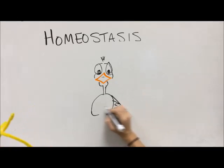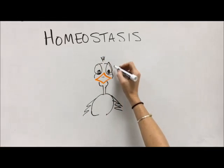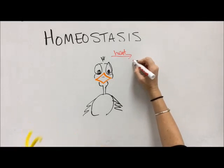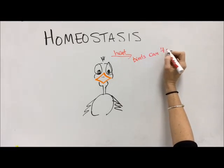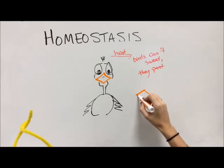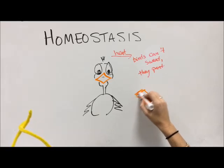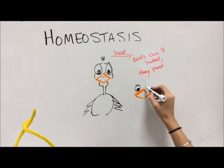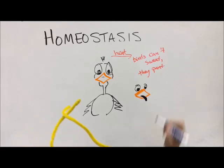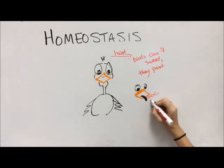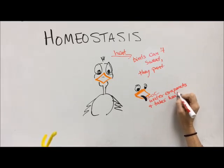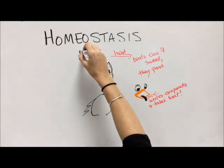Birds do this too. When birds get too hot, they don't really sweat — they don't have sweat glands like we do. Instead, birds pant, just like a dog: they open their mouth, stick their tongue out, and breathe very heavily. In doing that, they push air over the tongue and over the moist surface of their mouth, which helps the water evaporate and takes heat with it.